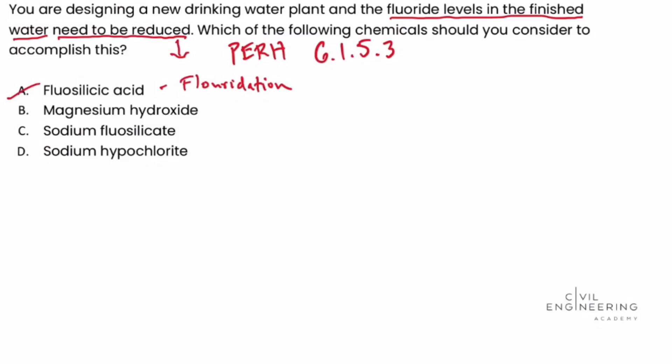If we look up magnesium hydroxide in the table, we see it is used for defluoridation. Well, defluoridation is the opposite of fluoridation. Defluoridation is reducing the fluoride level in the water. So that could be a potential answer, and we'll evaluate the next two choices.